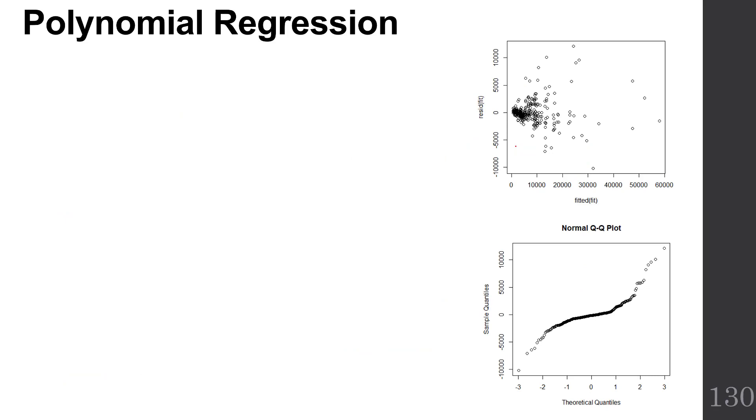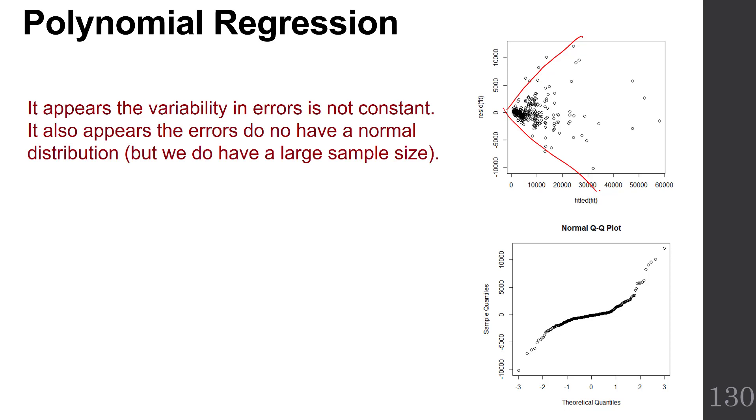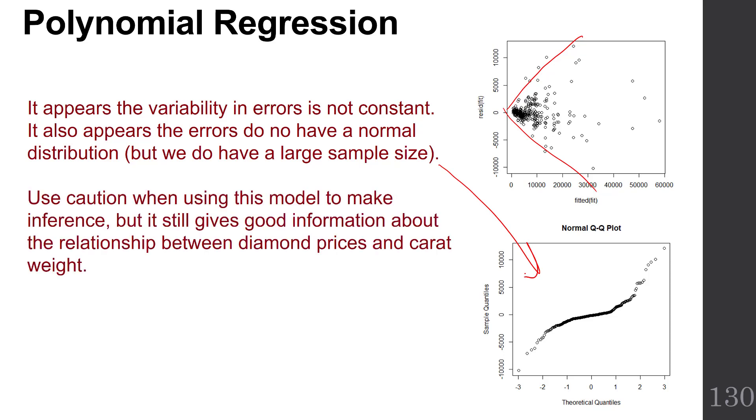If we look at the assumptions, remember the usual assumptions hold. The errors are independent, they have mean zero, constant variance, and normality. Notice that it looks like the variability is not constant. It looks a little bit like it increases and then possibly decreases. It also appears the errors do not have a normal distribution from the QQ plot. But we do have a large sample size. So use caution when using this model to make inference, but it still gives us good information about the relationship between diamond prices and carat weight.